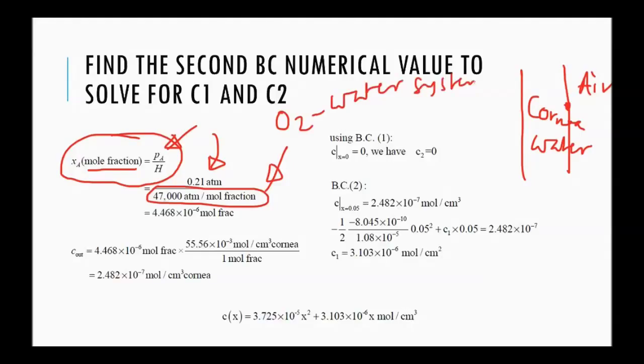This, we can see from text. So, the concentration of oxygen in the cornea is this and then from there, from this mole fraction, we can convert further into so many moles per meter cube of cornea, per centimeter cube of cornea.